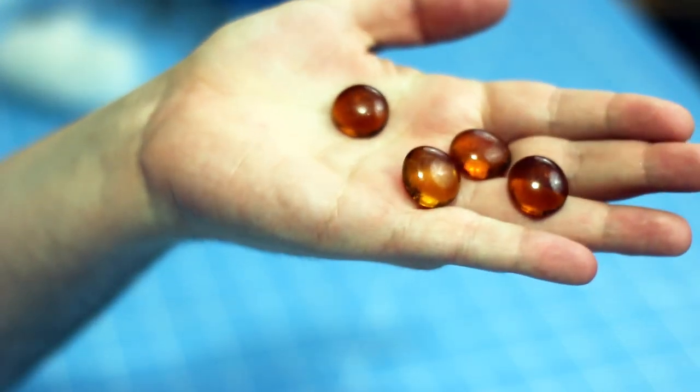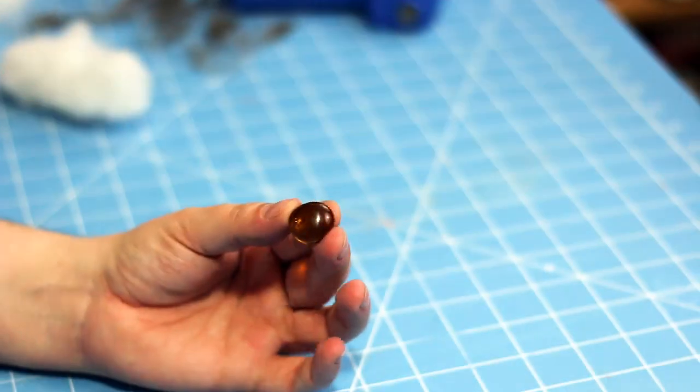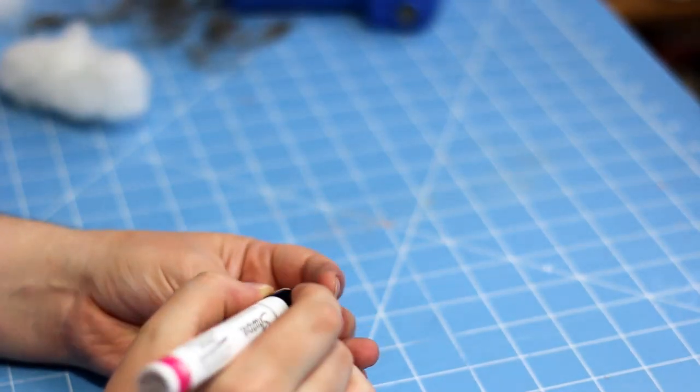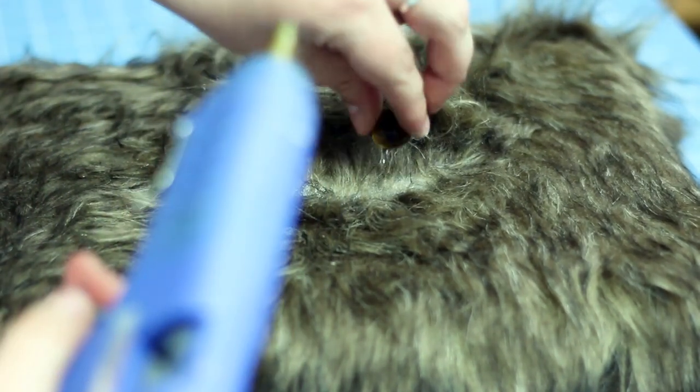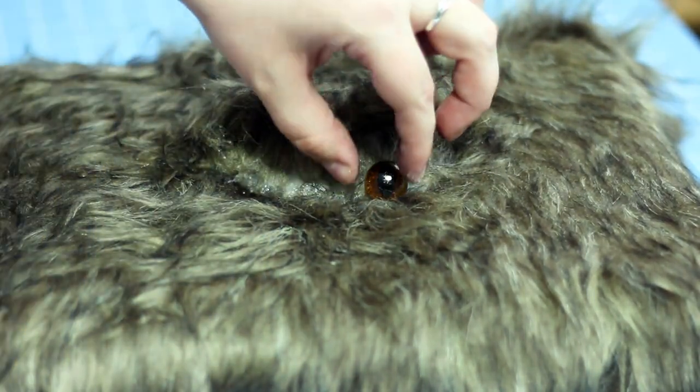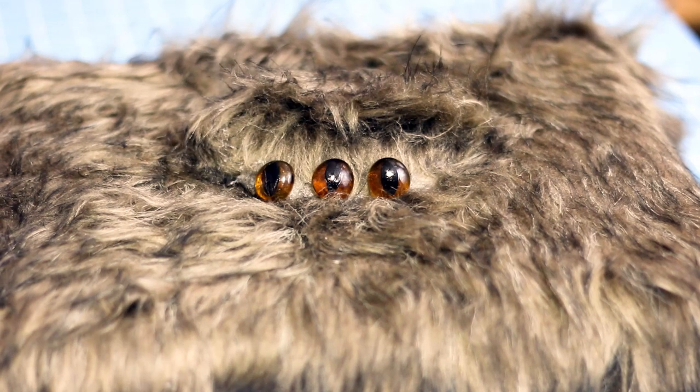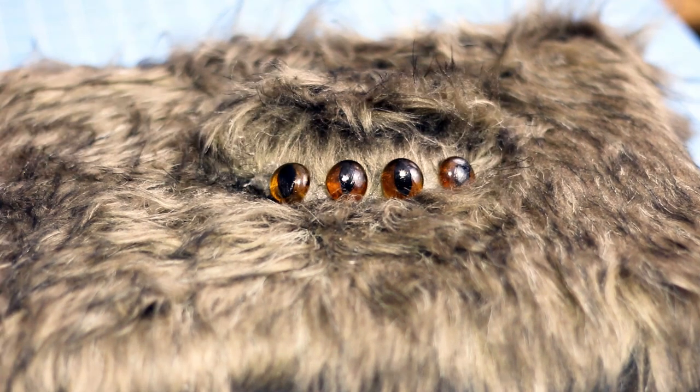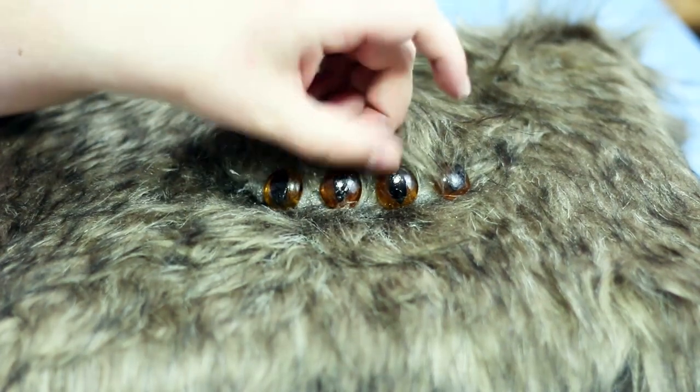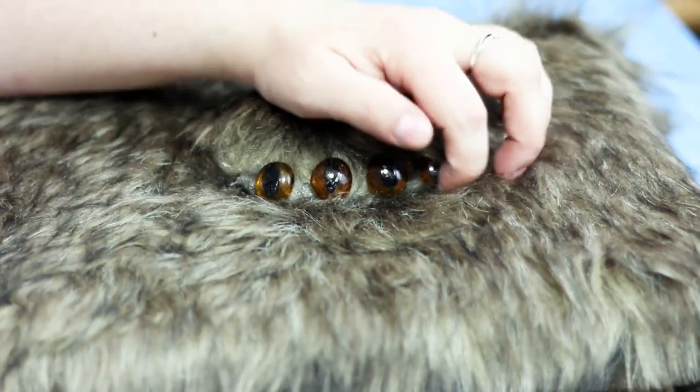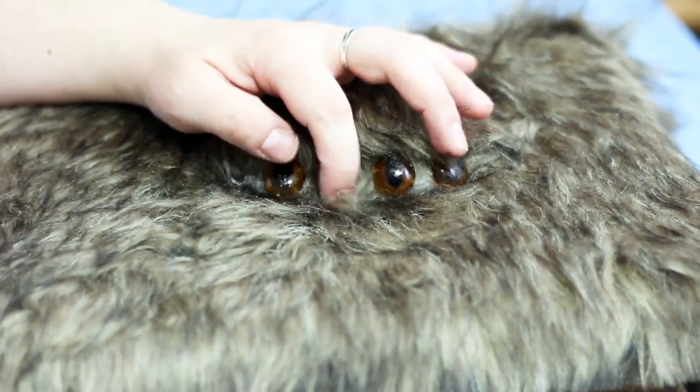To make the eyes, I use four brown vase filler stones. Using a sharpie, I drew on some cat eye pupils. Then I glued the four eyes in place. Then just kind of brush the fur back down a little to cover up the eyes slightly.